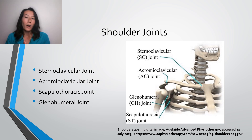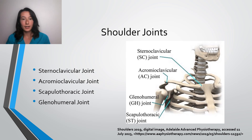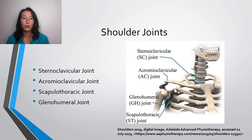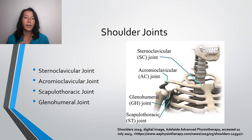Why is learning about the shoulder joint so complex relative to our other joints? Well, we are faced with not only one, not only two, not three, but four joints: we have our sternoclavicular joint, acromioclavicular joint, scapulothoracic joint, and glenohumeral joint.